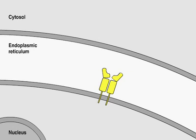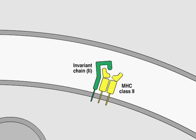The two chains of the MHC class II molecule assemble in the endoplasmic reticulum, the ER, with a third chain, the invariant chain, shown here in green.